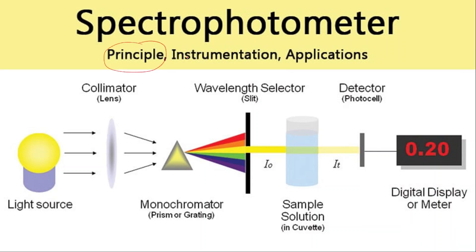Now we will discuss the instrumentation principle and its application. The spectrophotometer has a light source, then a collimator lens, and then a monochromator.